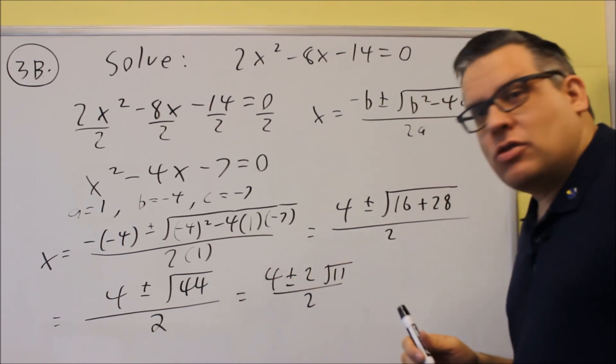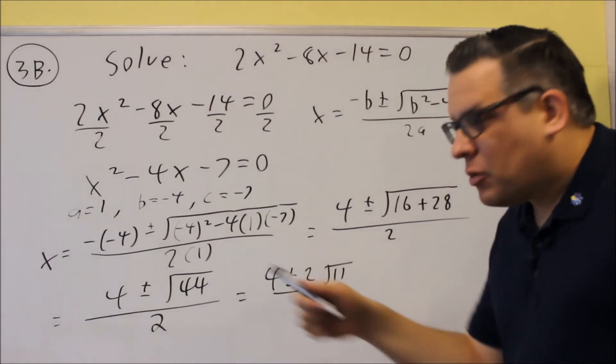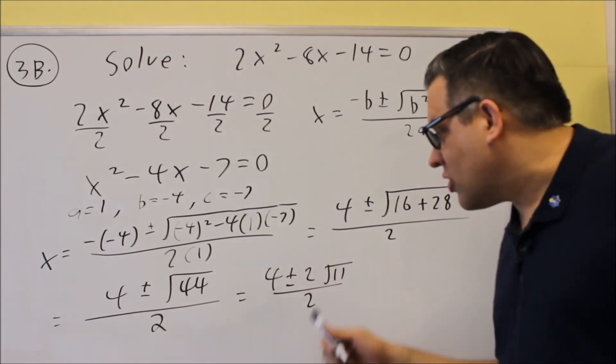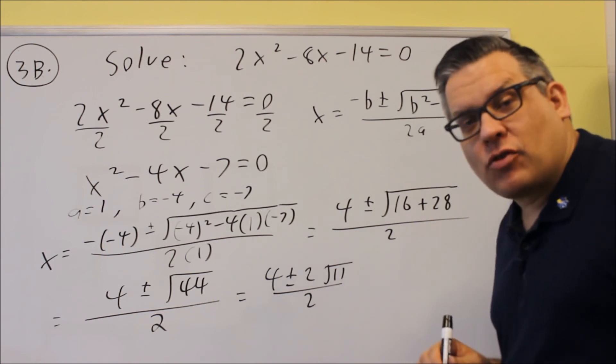So again, break it down into, we're trying to see what's the highest perfect square that can go into that. That would be a 4 in that case. Square root of 4 is a 2, and that's where the 2 comes from outside. And you have a square root of 11 left over inside.